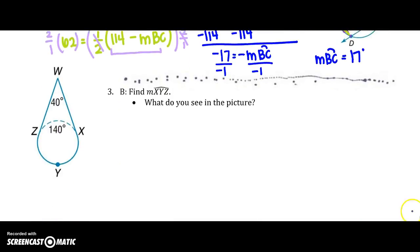Let's look at this next one. I need to find arc XYZ. In this picture I have two, well, both of my segments intersect the circle at one point, so I have two tangents.